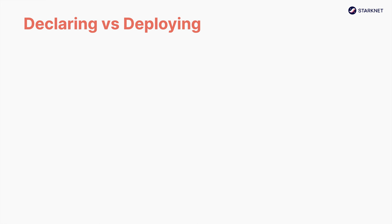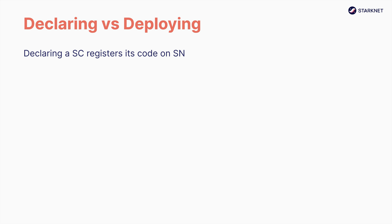Declaring and deploying are two different steps required to make your smart contract available on StarkNet. Declaring a smart contract registers its code on StarkNet. If the same smart contract code has been declared by someone else before, you don't need to declare it again — if you try, the transaction will simply fail informing you that the code has already been declared. An example of this is declaring the code of an ERC20 token; it has more likely already been declared by someone else, so you don't have to do it again.